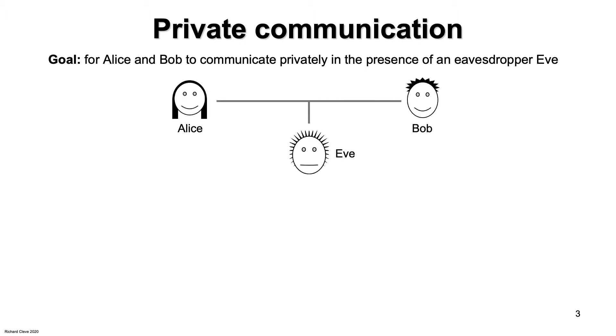The private communication scenario can be described in terms of three participants: Alice, Bob, and an eavesdropper, Eve. Alice and Bob can send messages to each other, but Eve can see each message. The goal is for Alice to convey a message to Bob in a manner where Bob learns what the message is and Eve learns no information about the message.